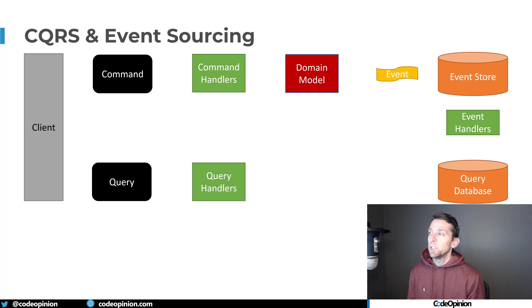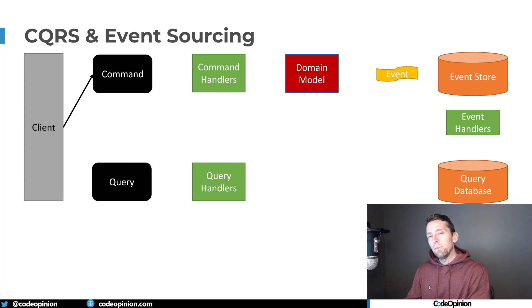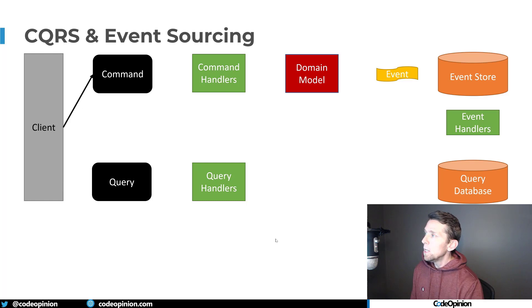Let's show how the flow works and break apart what is what. The first thing that happens is a client makes a request, and this is the first part of CQRS — we're going to be separating reads and writes. We're separating our writes, which are our command side, and our reads, which are our query side. So we have two distinct paths.